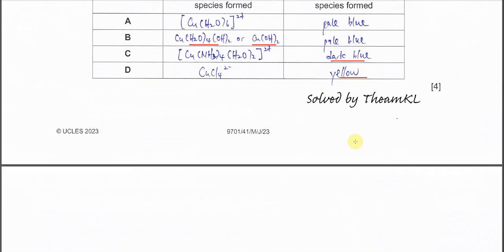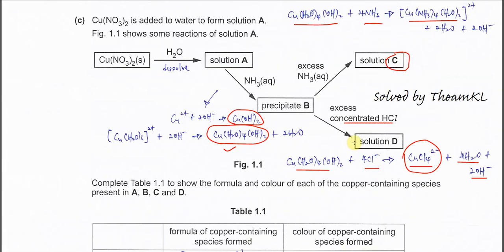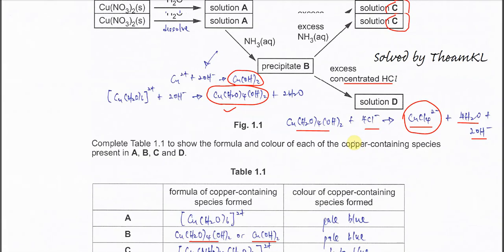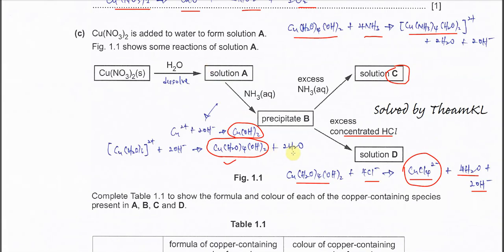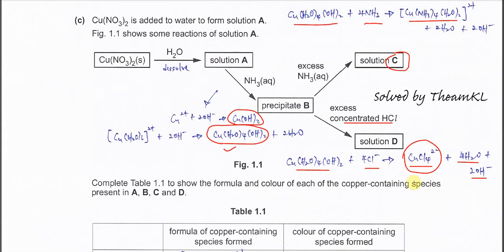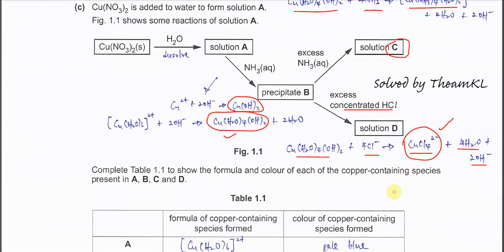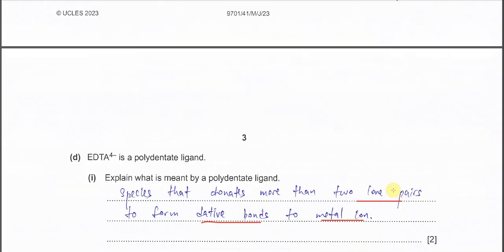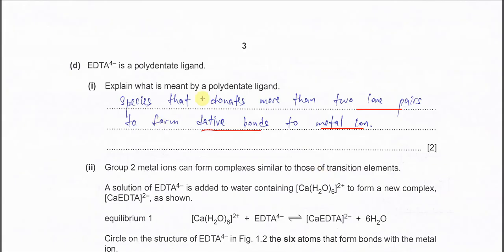A ligand is a species that — for example, take chloride — has lone pairs, so chloride is able to form dative bonds with the copper ion. These are dative bonds. Chloride is a ligand. EDTA is also a ligand.